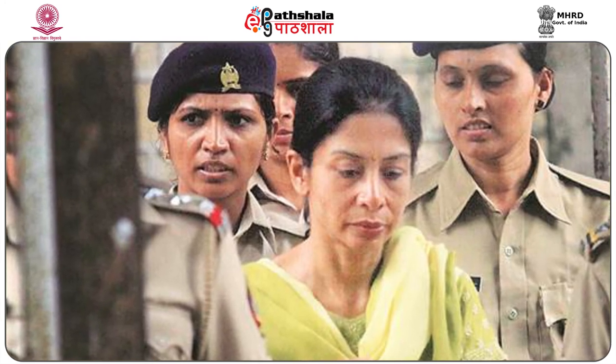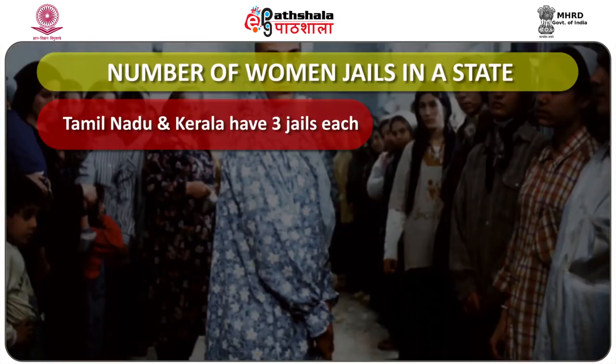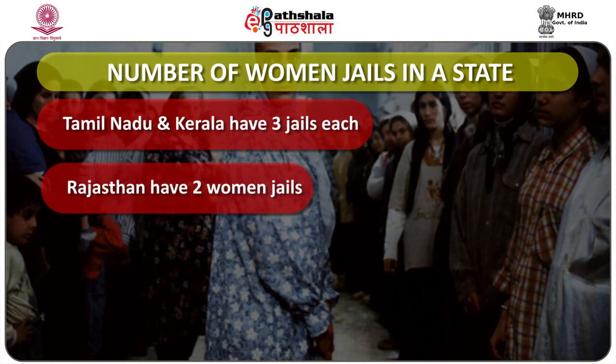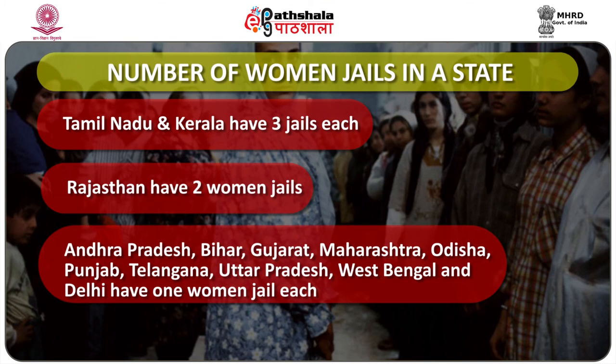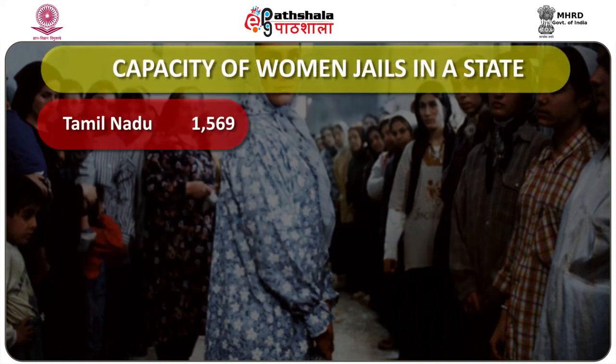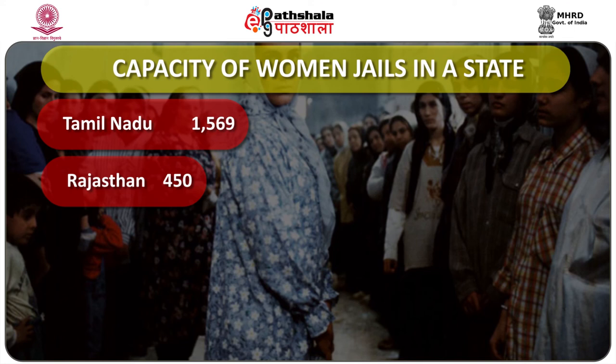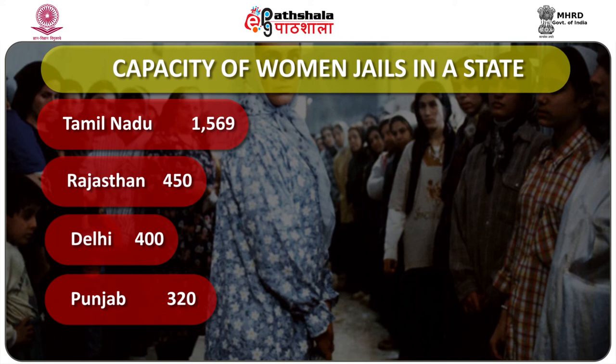Women jails exist exclusively for women prisoners but are existing only in 13 states and union territories. Tamil Nadu and Kerala have three women jails each, and Rajasthan has two. Bihar, Gujarat, Maharashtra, Odisha, Punjab, Telangana, Uttar Pradesh, West Bengal, and Delhi each have one women jail. The capacity for women inmates was highest in Tamil Nadu at approximately 1,600, followed by Rajasthan with 450, Delhi with 400, and Punjab with 320. These women jails house mainly women convicts.